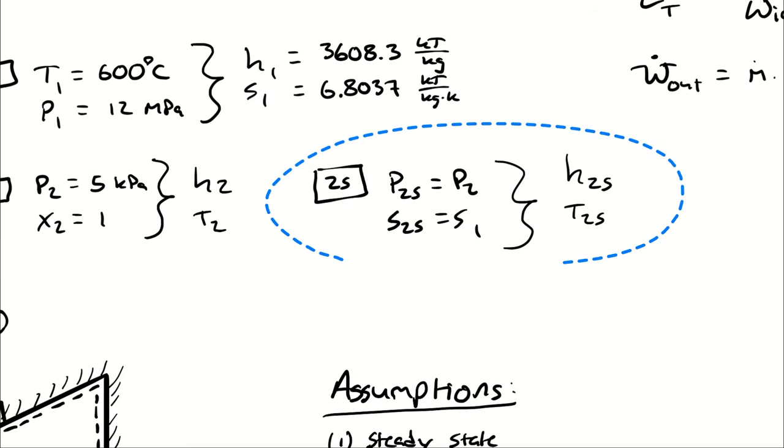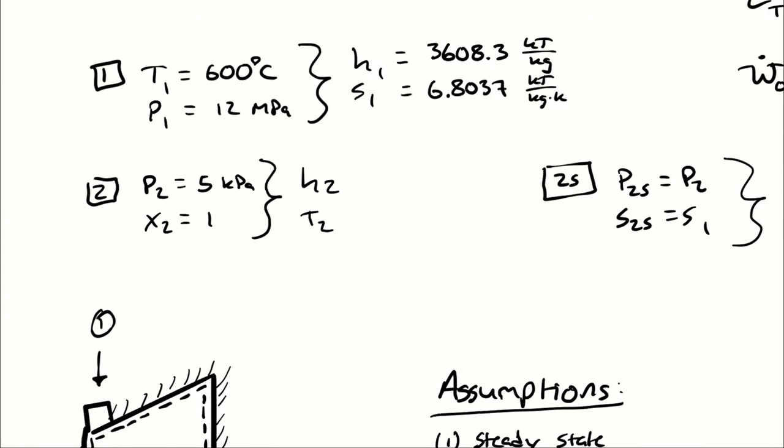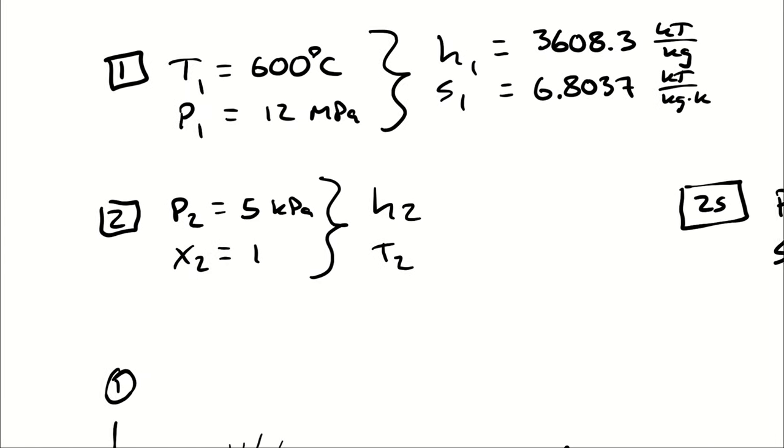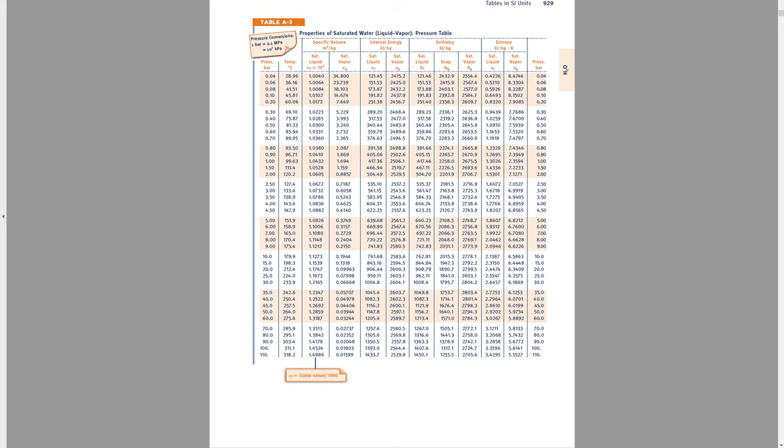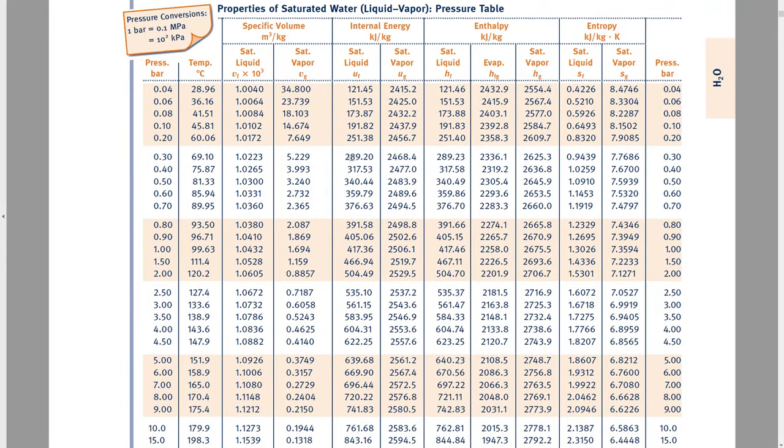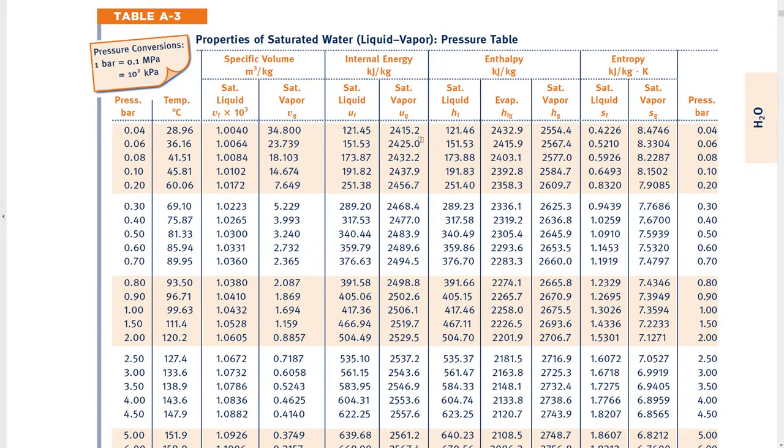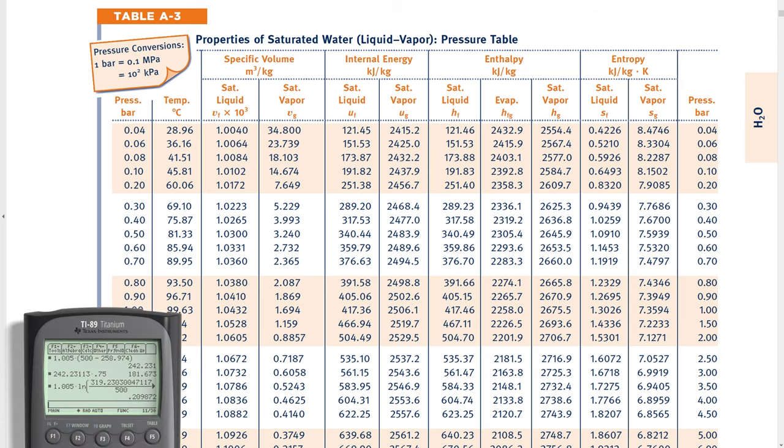Then next I will do H2 and T2 because that should be a pretty straightforward lookup. I have a saturated vapor at 5 kilopascals, which means I'm going to go back to my saturation tables by pressure. 5 kilopascals is going to be 0.05 bar, which annoyingly is between 0.04 bar and 0.06 bar. So I'm going to have to interpolate for both my temperature and my enthalpy. That interpolation, fortunately, is going to be just halfway between 0.04 and 0.06.